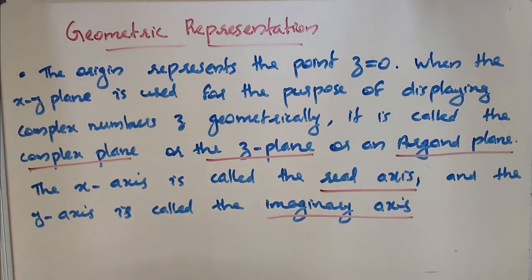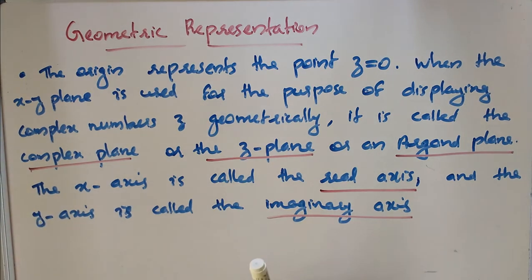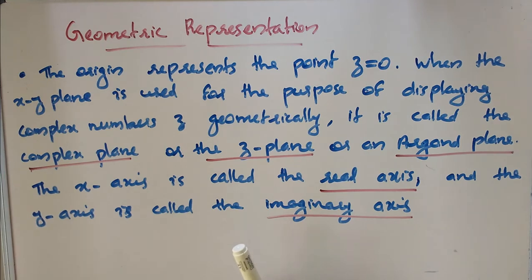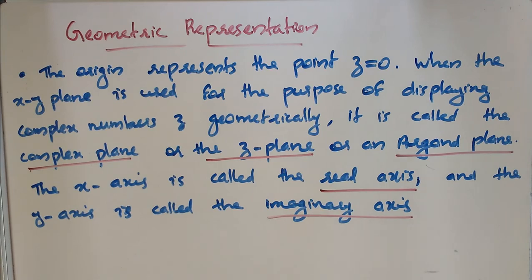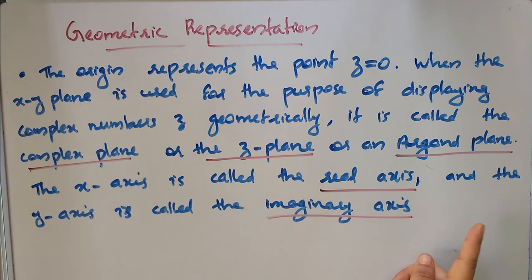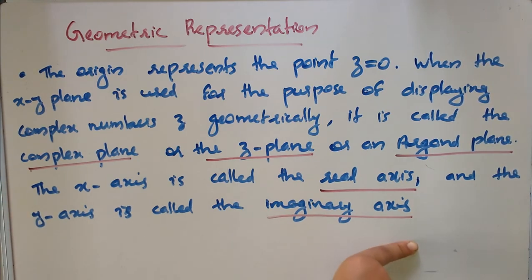There are two axes: the x-axis and the y-axis. The x-axis carries the real values and the y-axis carries the imaginary values. The x-axis is called the real axis and the y-axis is called the imaginary axis.